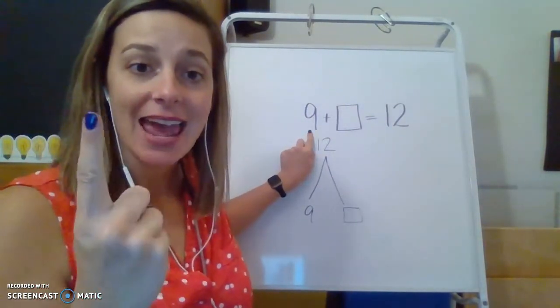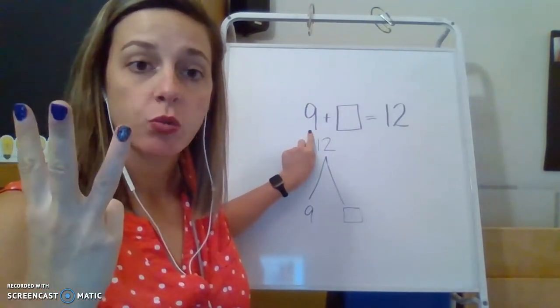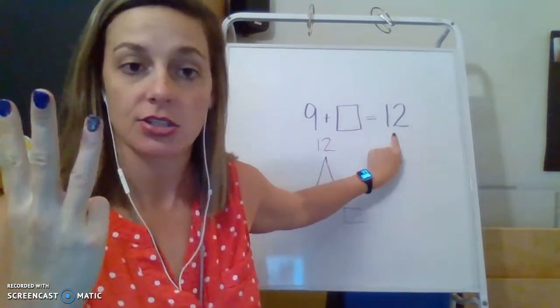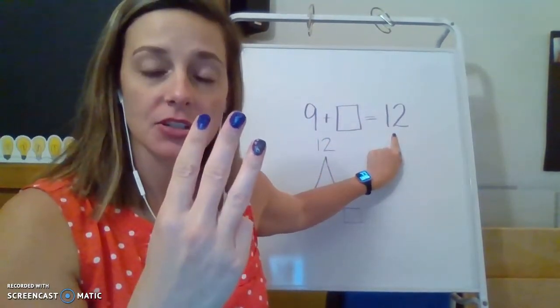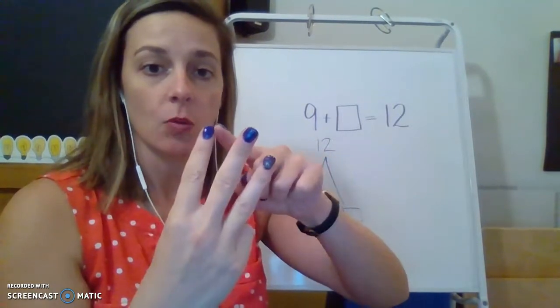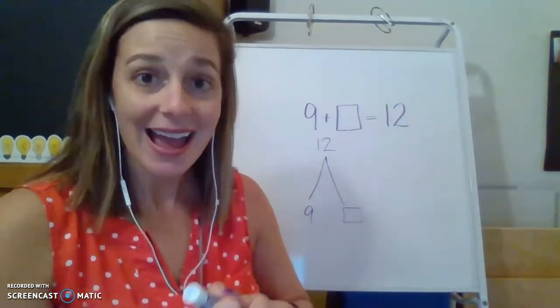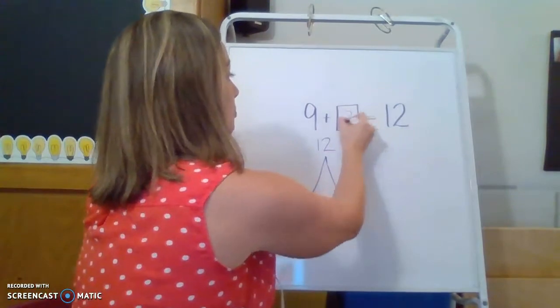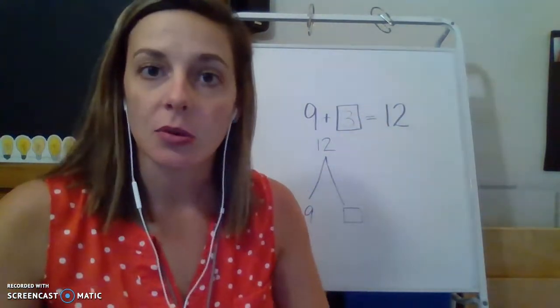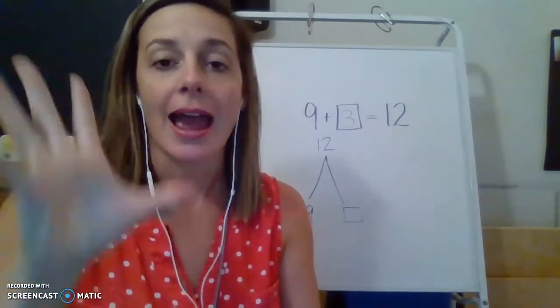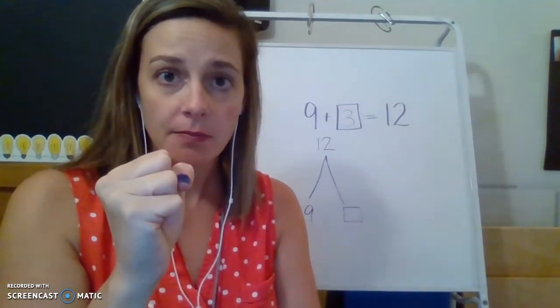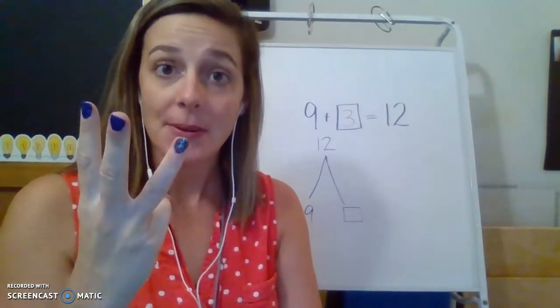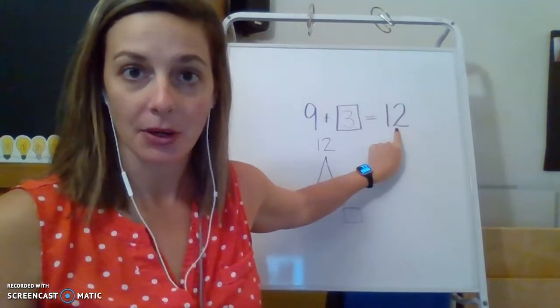Nine, 10, 11, 12. Oh, I need to stop. How many numbers did I go up second grade? One, two, three. So nine plus three is equal to 12. I grab the starting number, and I count up until I get to my ending number.